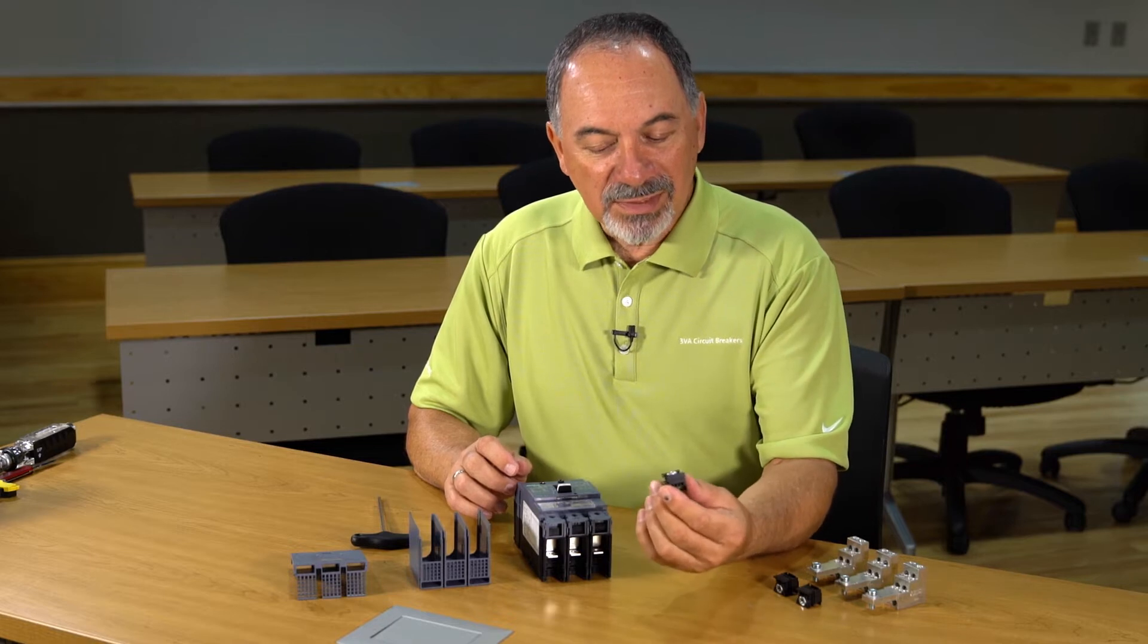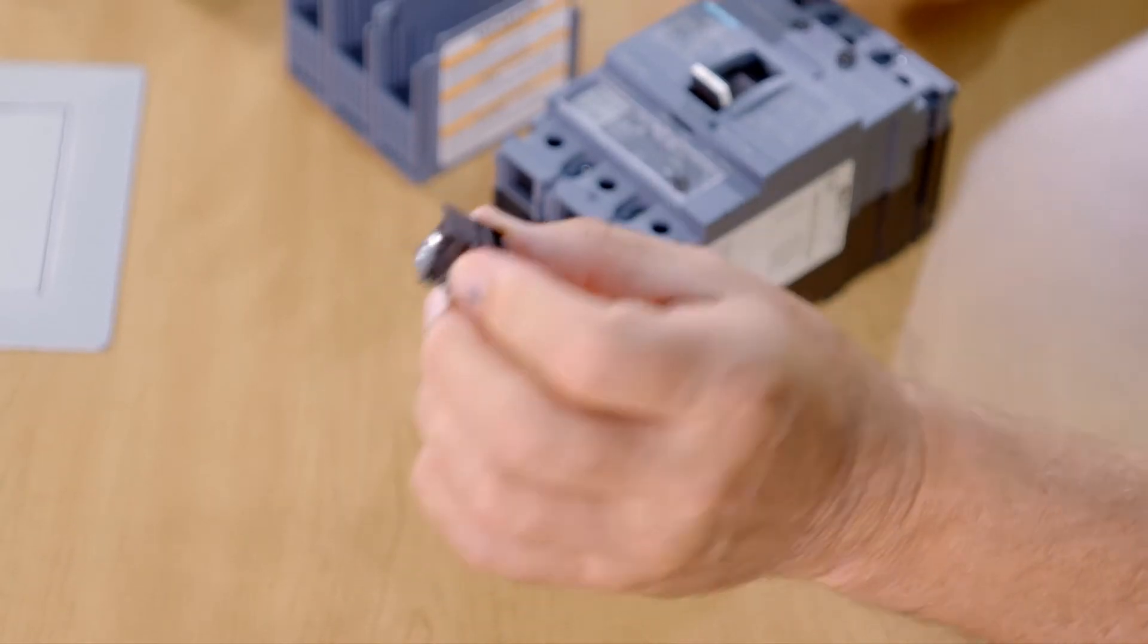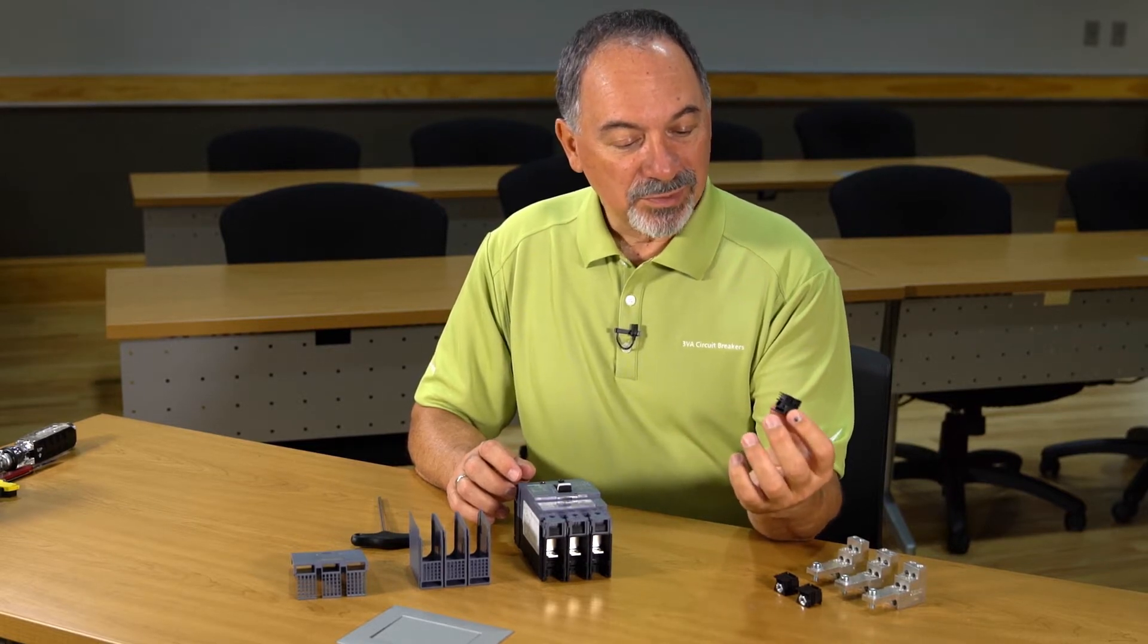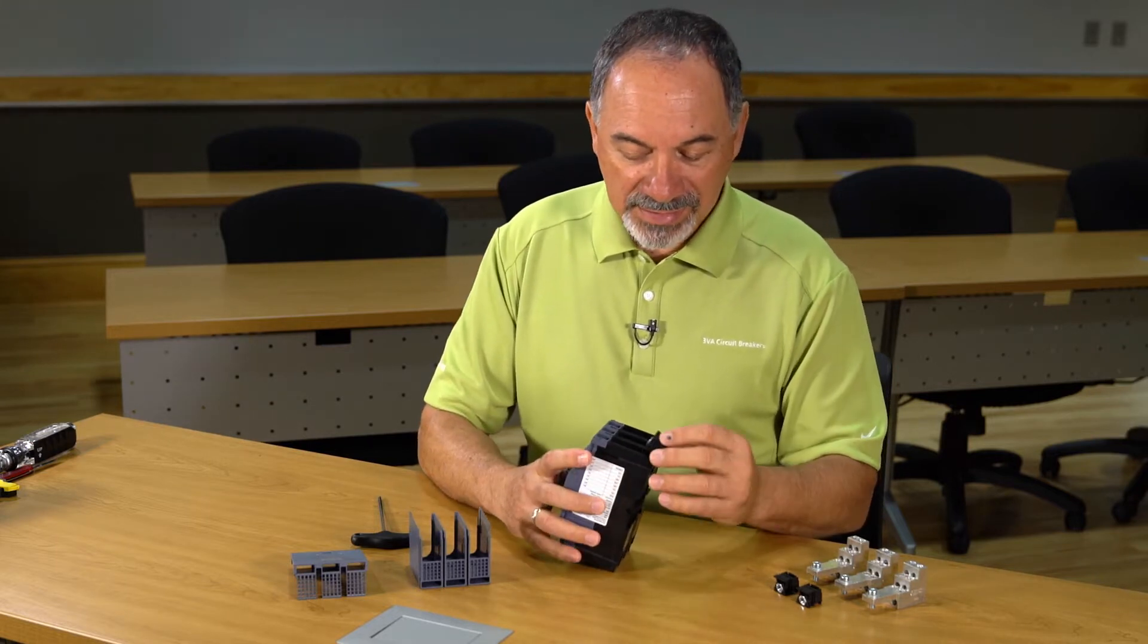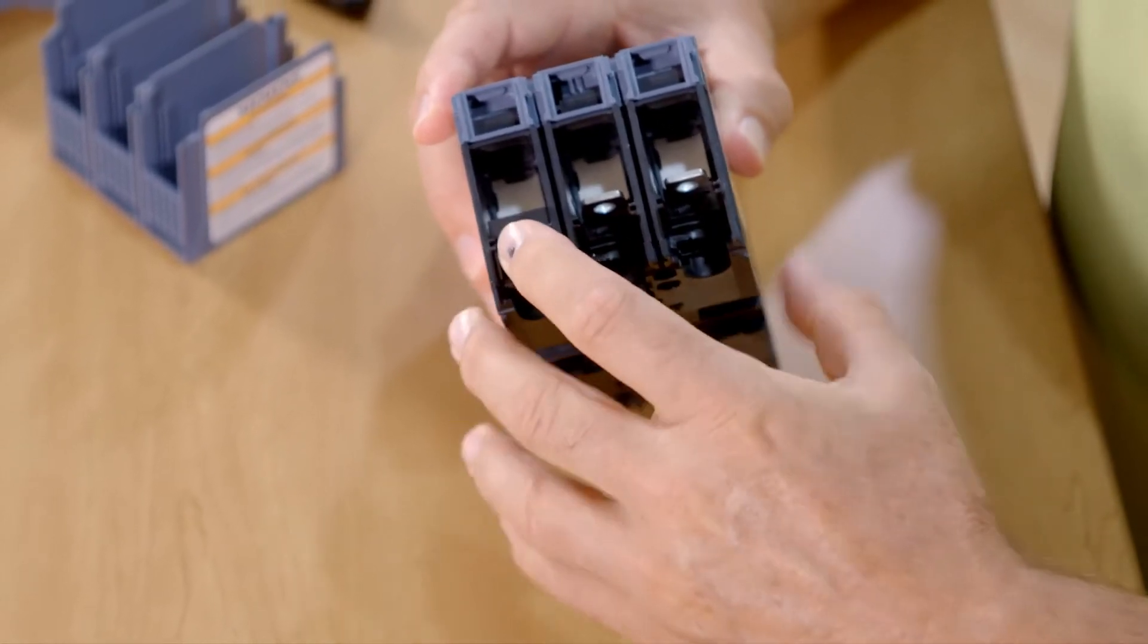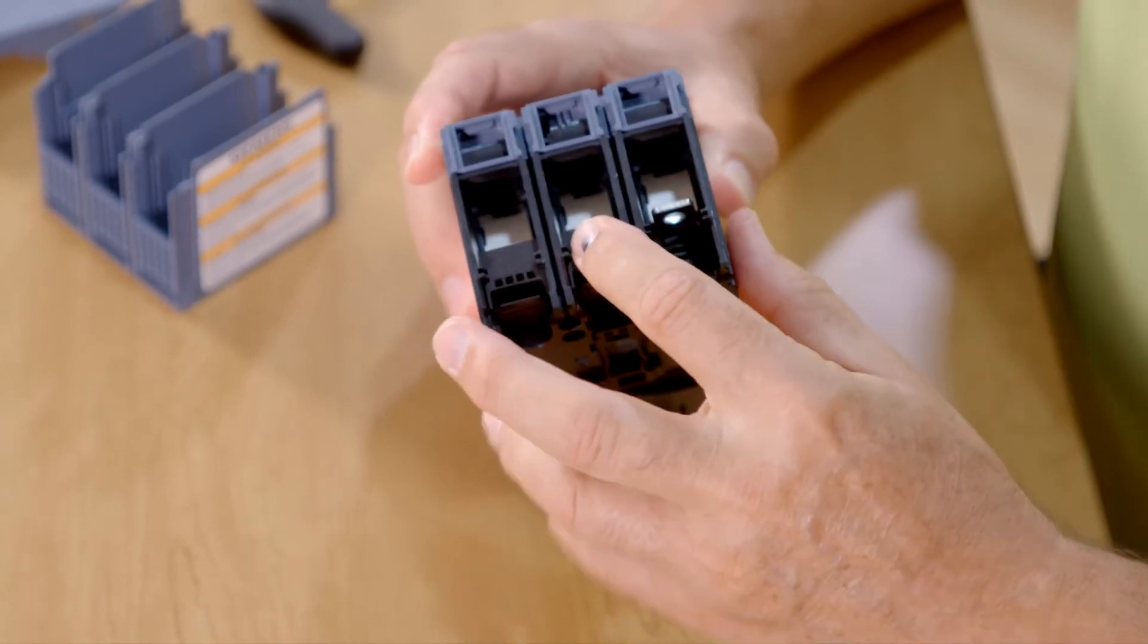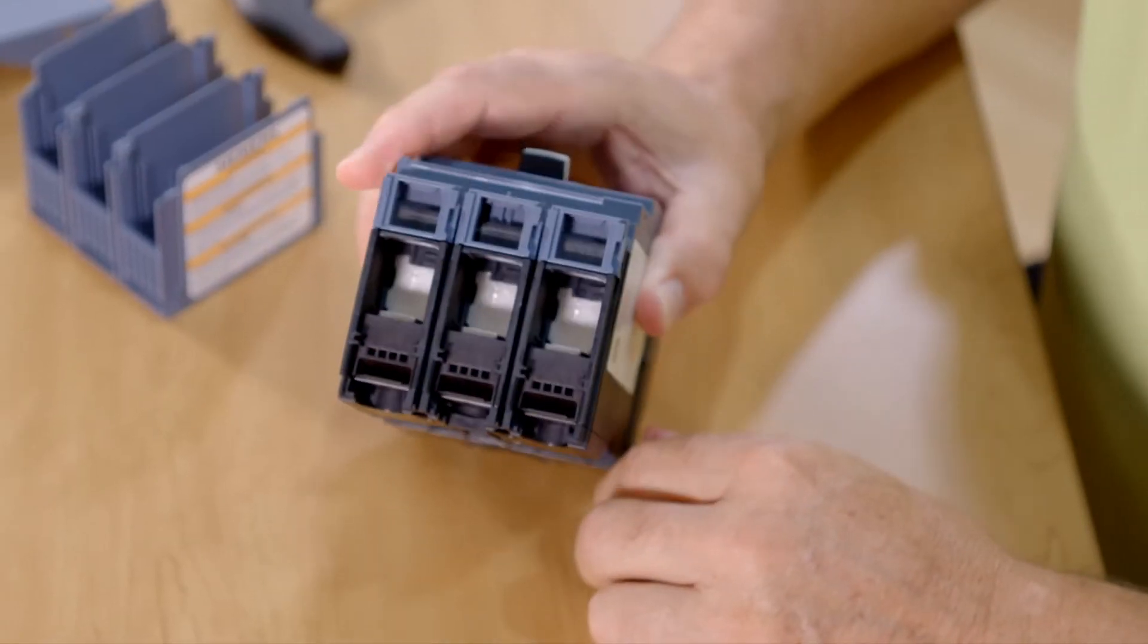First thing we need is the rear insulator or the nut keeper. There's a nut actually inside of this insulator which we'll use to attach the distribution lugs. We have to install that in the circuit breaker. It snaps in place. I'll go ahead and put all three in place so that we can install all of the distribution lugs.